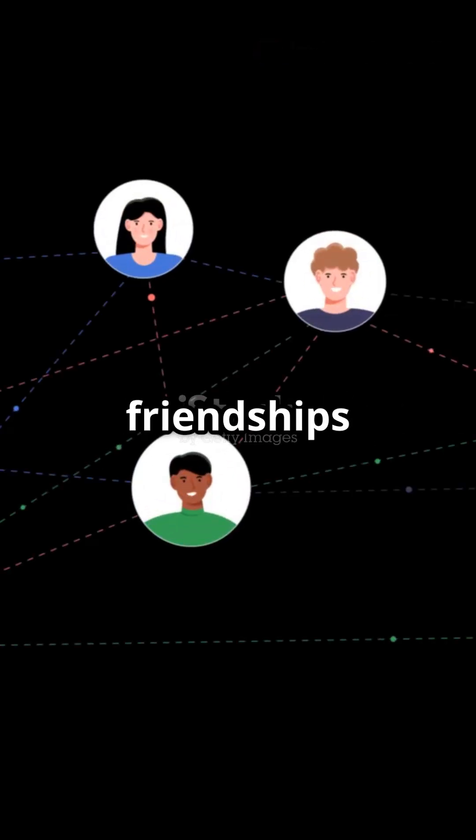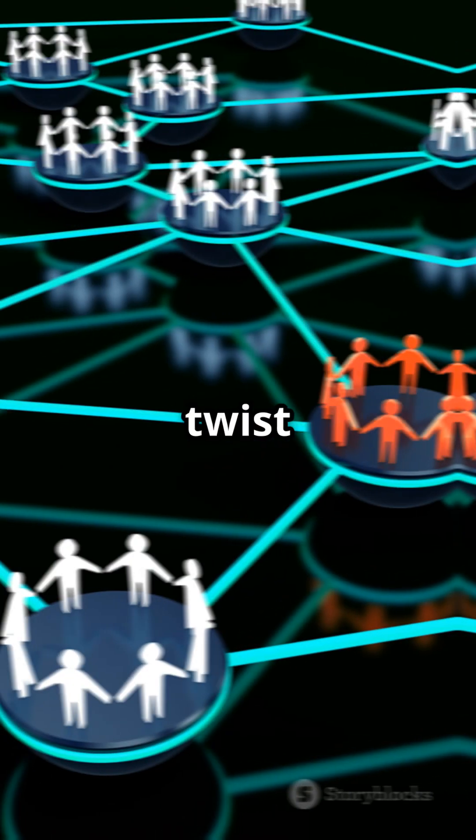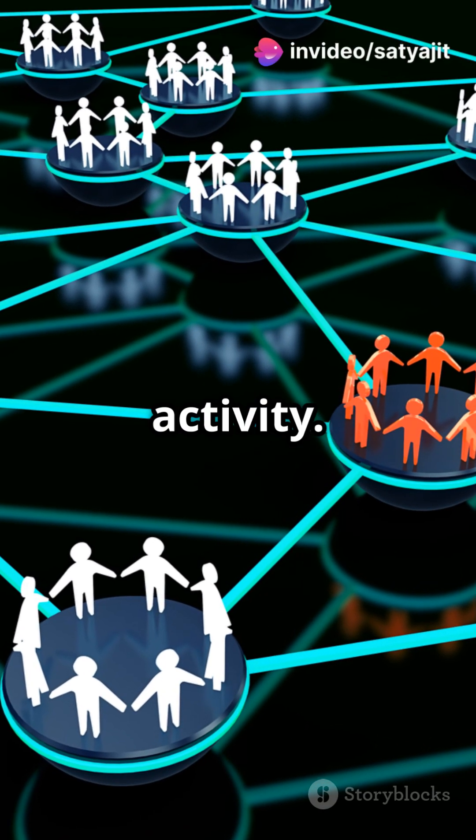Imagine a graph like a social network. Here, users are nodes and friendships are edges. But here's the twist. Each user has features like age, interests, and activity.